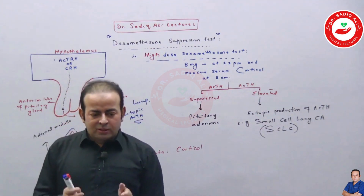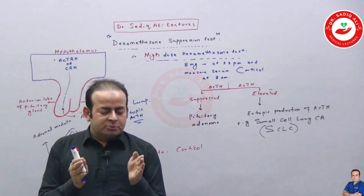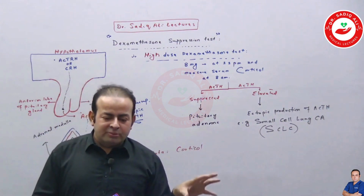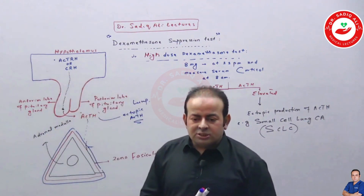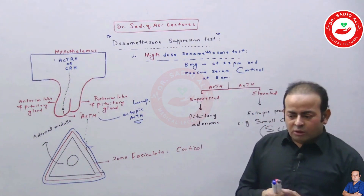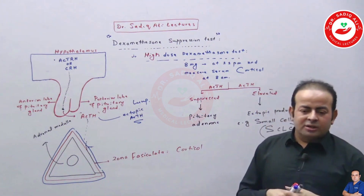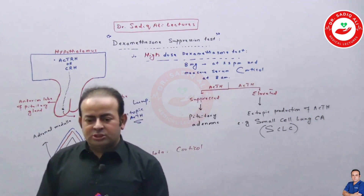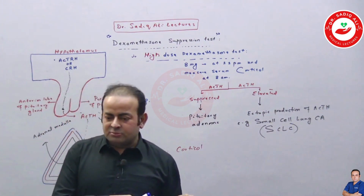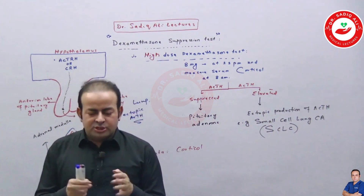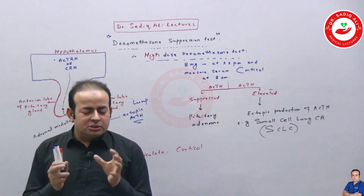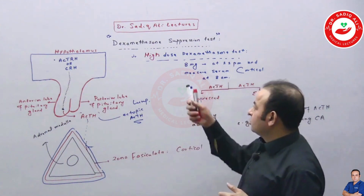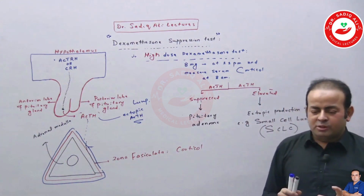To summarize: if serum cortisol is high, think about Cushing syndrome. If the problem is in the adrenal gland itself, it is primary Cushing syndrome. If the problem is in the pituitary due to increased ACTH, it is Cushing disease. Use low dose dexamethasone suppression test first — if ACTH is suppressed, the problem is in the gland itself. If ACTH is not suppressed, proceed to high dose dexamethasone to differentiate between pituitary and ectopic (lung) source.